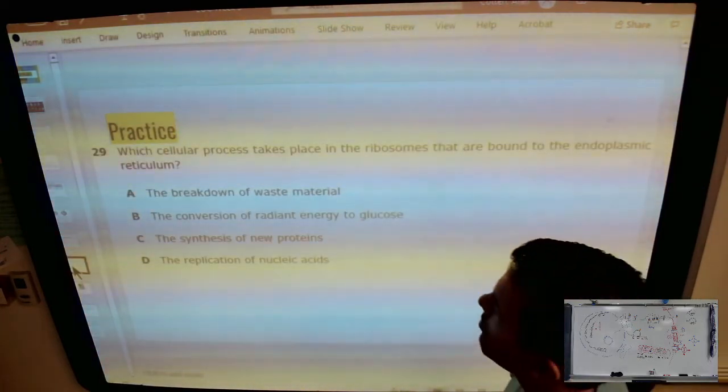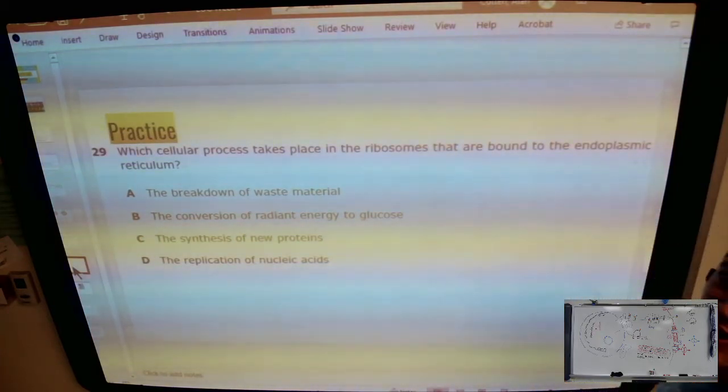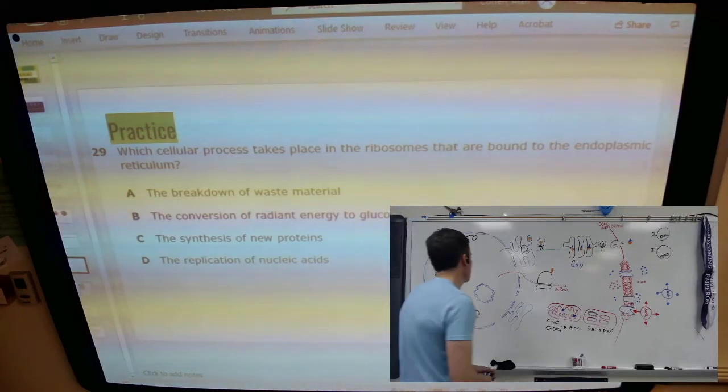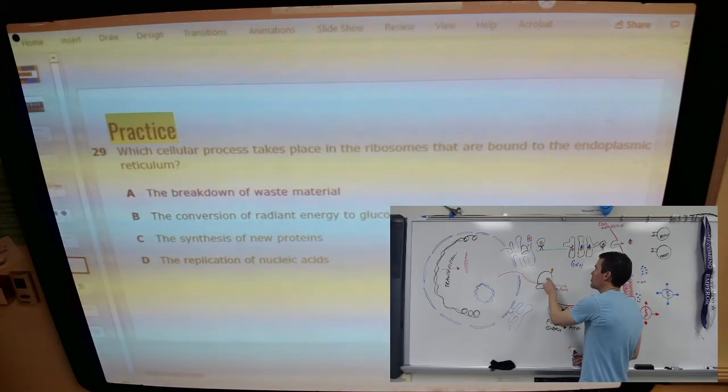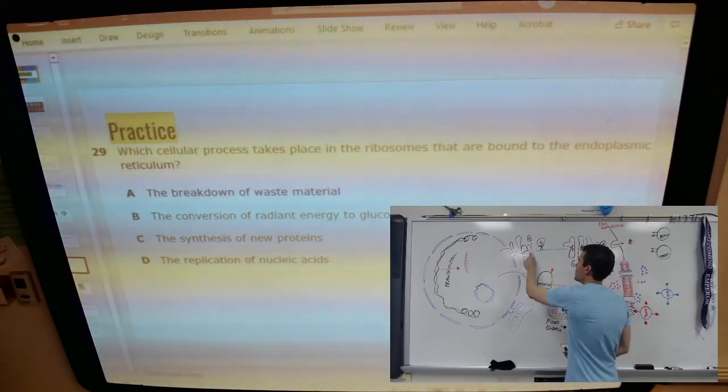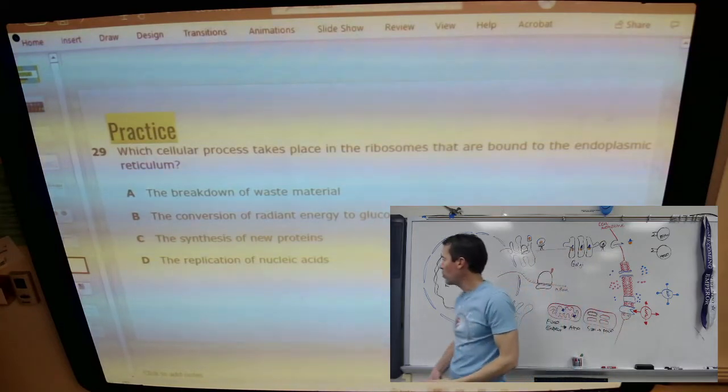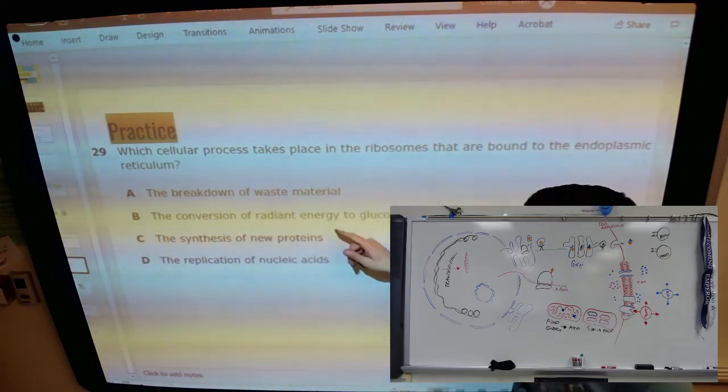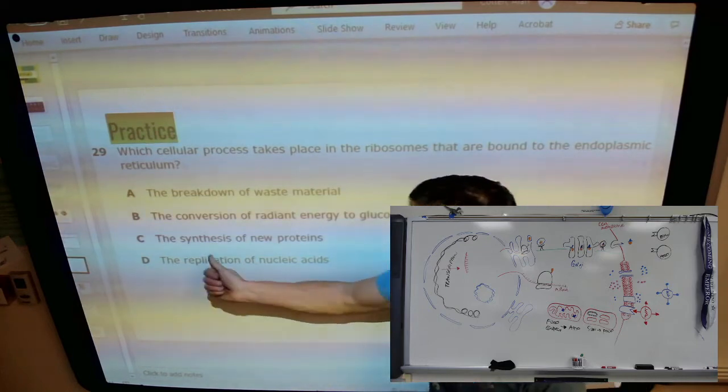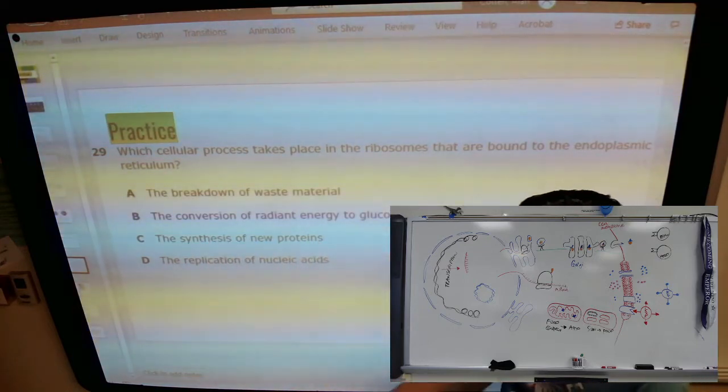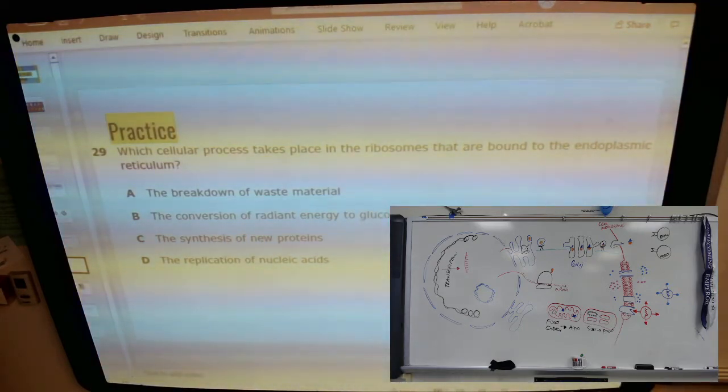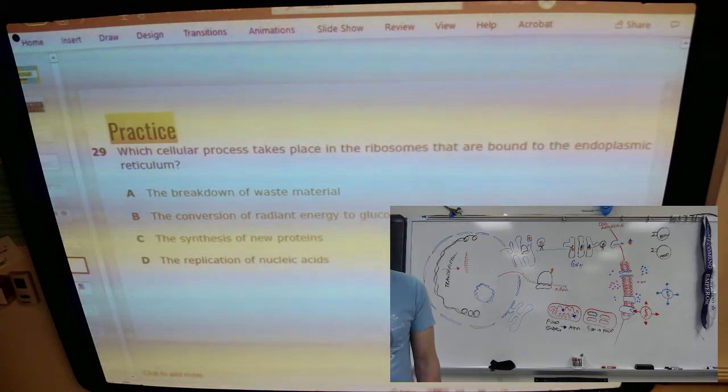Next, which cellular process takes place in the ribosomes that are bound to the ER? So back over here, make this just a little bit bigger on this one so you can kind of see. You might remember that mRNA ribosomes, they make proteins. If they're attached to the ER, then that's rough ER, and they're manufacturing proteins. So breakdown of waste, no, that's more of a lysosome thing. Conversion of radiant energy to glucose, no, that sounds like a chloroplast. The synthesis of new proteins, yeah. It's not replicating nucleic acids, that'd be inside the nucleus. So synthesizing new proteins.